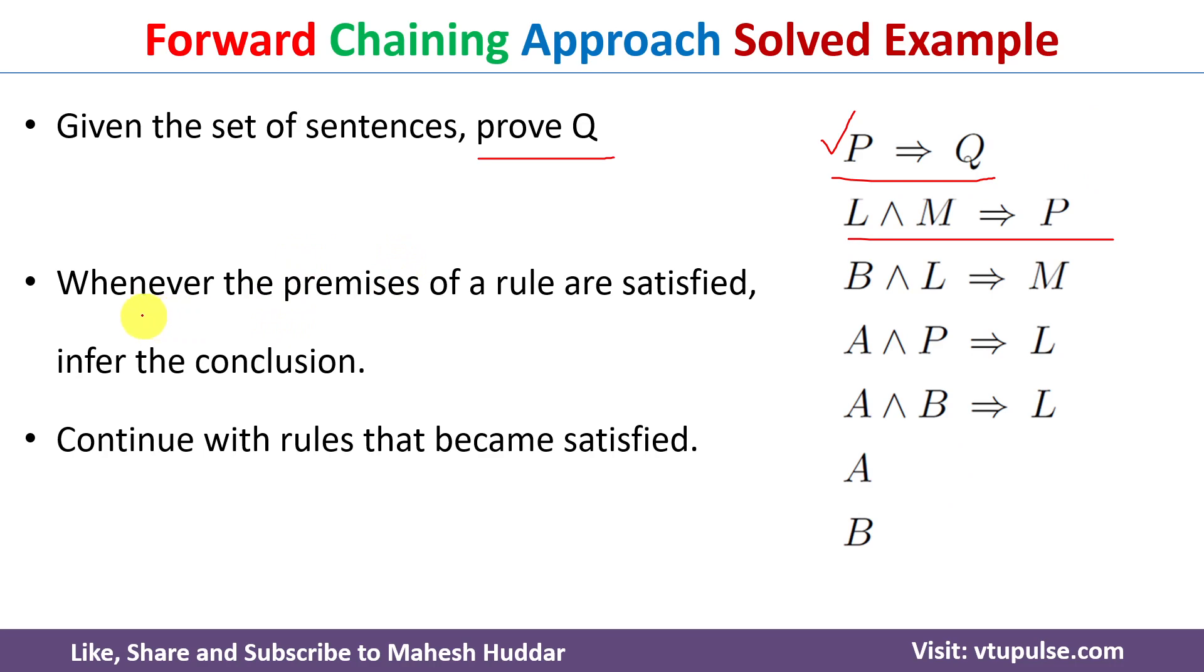In forward chaining approach, what we do is whenever the premises of a rule are satisfied or true. For example, if you consider this one, if L and M both of them are true, we conclude that the conclusion is also true here.